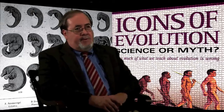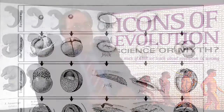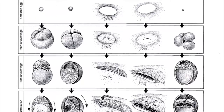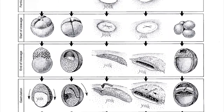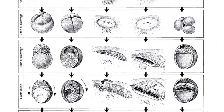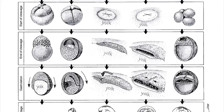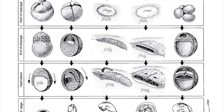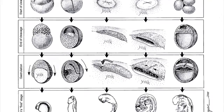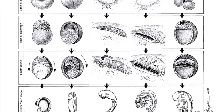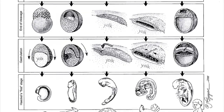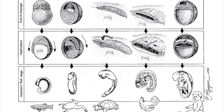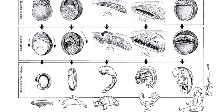They show typically in the first row embryos that look almost identical. These are embryos supposedly of fish, salamander, turtle, chicken, and various mammals. And then as they develop, these embryos become more and more different until we see the actual adult fish, salamander, turtle, and so on.